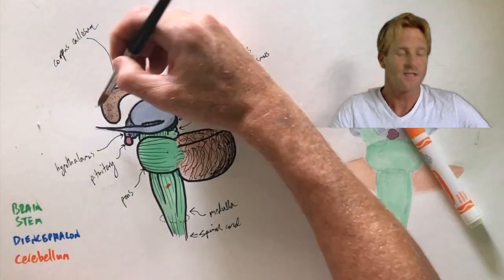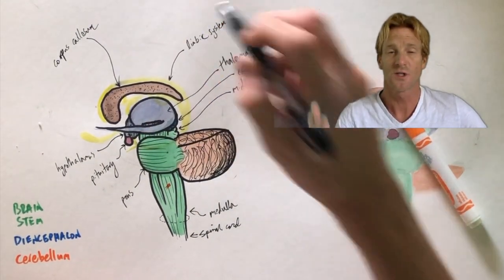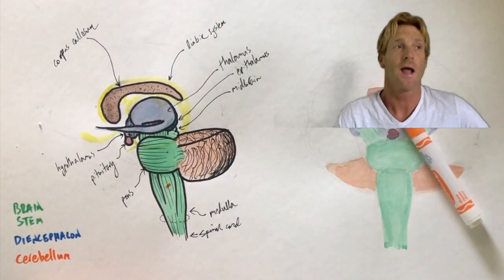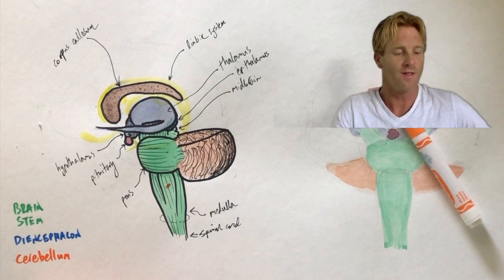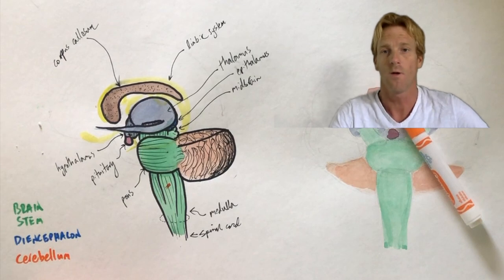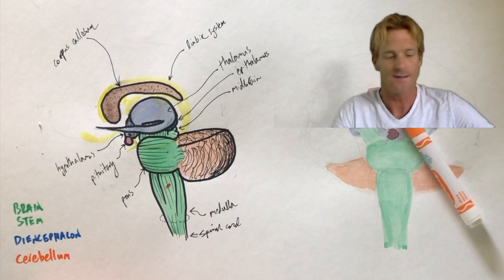And then in yellow we'll have the limbic system. This is a diffuse network of neurons that's highly involved in our ability to store memories and how we emotionally respond to different situations. You'll see that this anterior lobe of the limbic system is the olfactory lobe which explains why smells can elicit such strong memories and emotions.